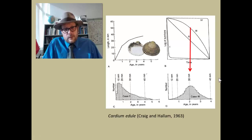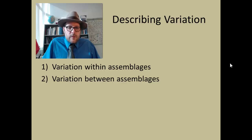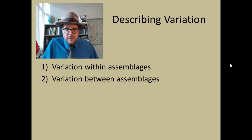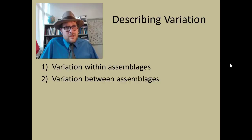Let's talk about how you describe variation in fossils you have collected. You can look at variation within assemblages and between assemblages. Within an assemblage you might ask whether you have two distinct populations that are morphologically different. You can also compare fossils from one stratum with ones collected somewhere else — maybe a higher horizon in the same formation, or a different geographic area. For example, comparing Utah fossils with fossils from Wyoming of the same type to see if there are any differences in your samples.